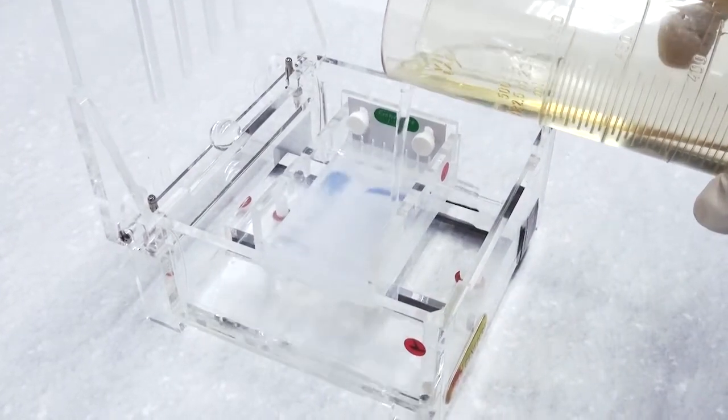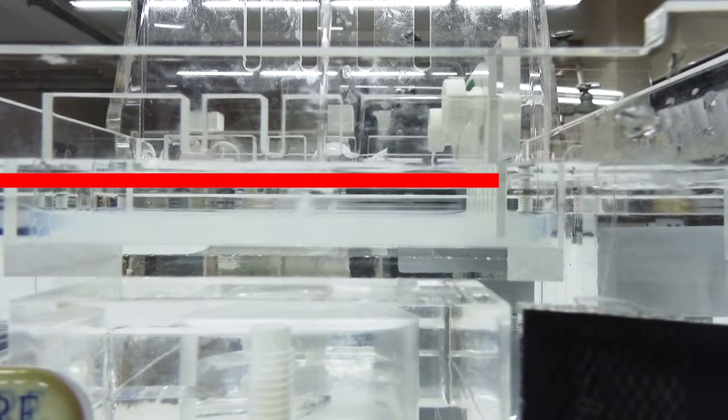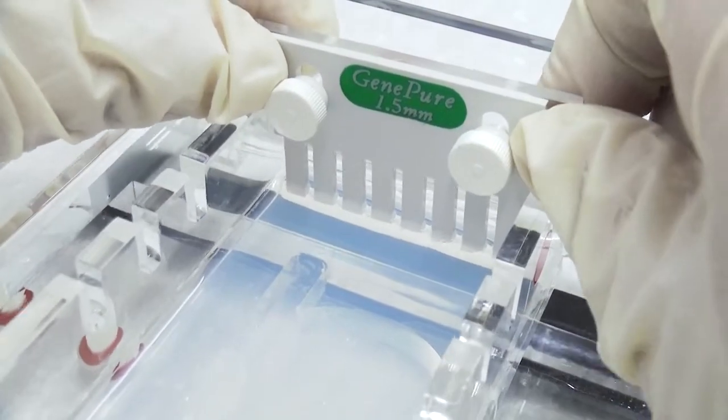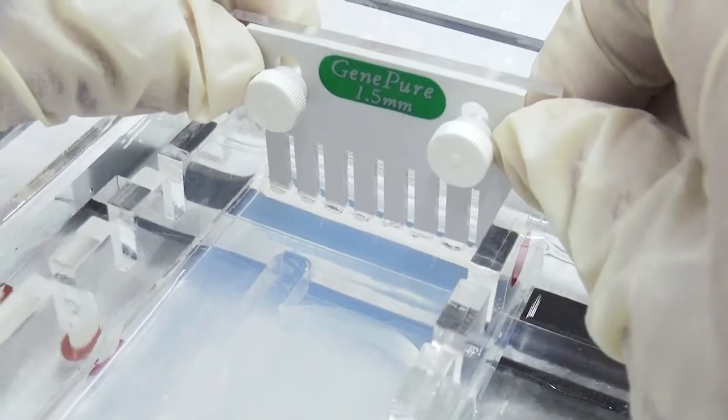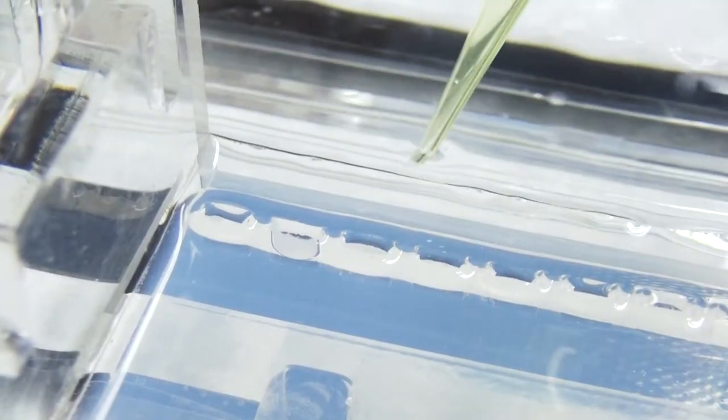Pour enough electrode buffer into the tank so that it just covers the gel. Remove the comb gently. Wash the loading wells with electrode buffer to get rid of bubbles.